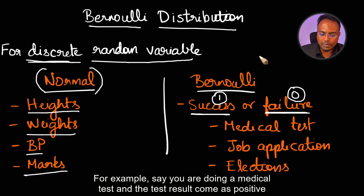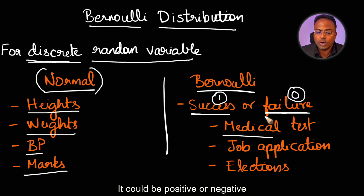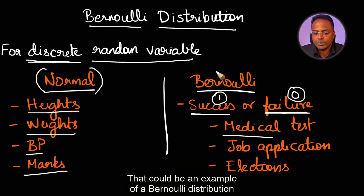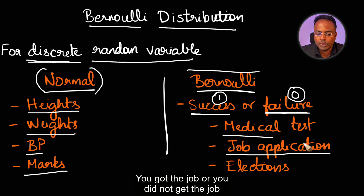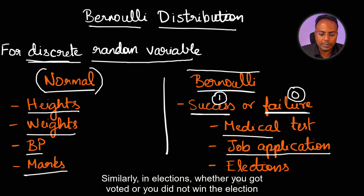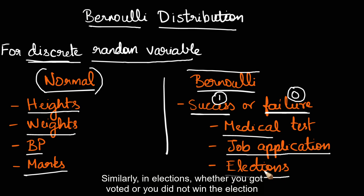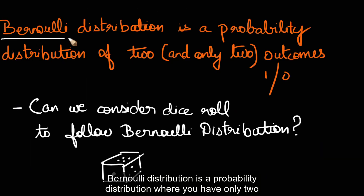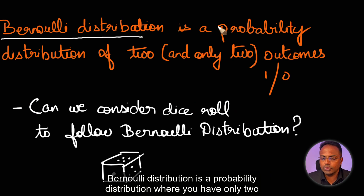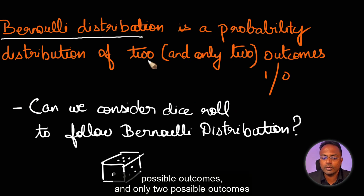For example, say you are doing a medical test and the result comes as positive or negative — that could be an example of a Bernoulli distribution. Likewise, a job application: you got the job or you did not get the job — success or failure. Similarly, in elections, whether you won or did not win. In short, Bernoulli distribution is a probability distribution where you have only two possible outcomes, marked as either 1 or 0.